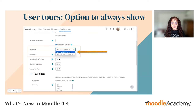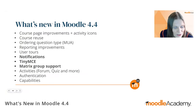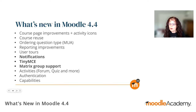A new user tour setting allows a tour to show each time you visit a page. Currently to see a user tour again you have to reset it via a link in the page footer, but you can now set 'show tour' to each time a filter matches, making the tour always show. A comment from Trent notes his university is leaning into badges more heavily, so the new reporting options will be helpful.